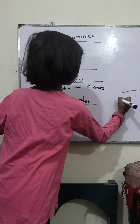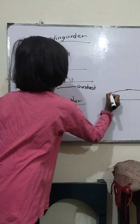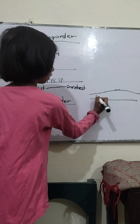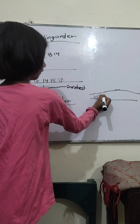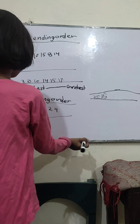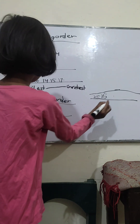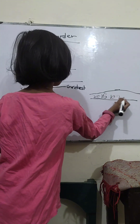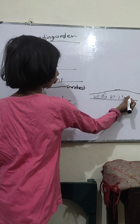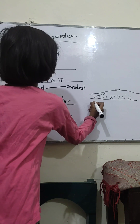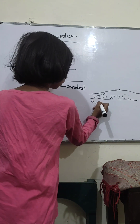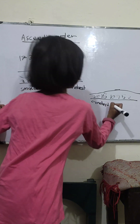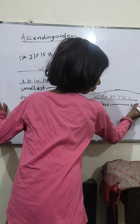Here we will write 20, 20, 10, 20. Greatest to smallest.